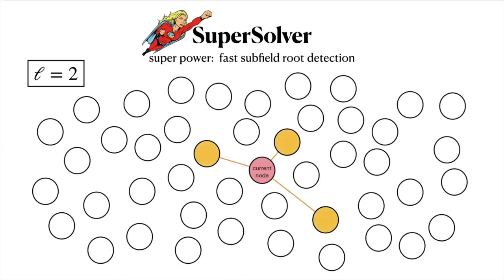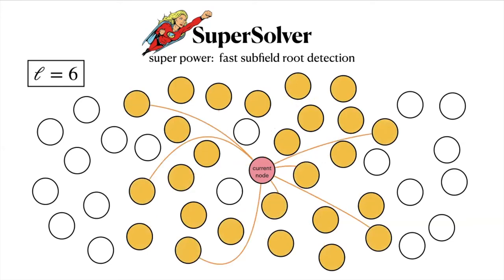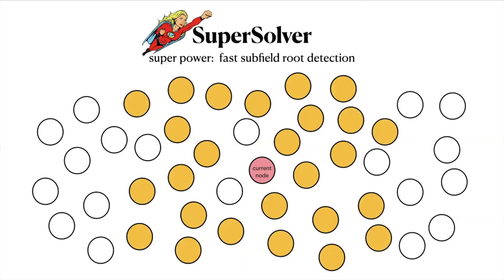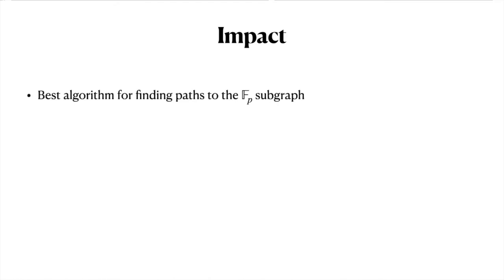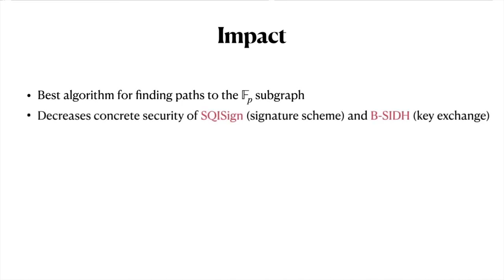Building on this, we present Supersolver with super-fast subfield root detection. This allows us to scan a larger proportion of the graph at each step, therefore minimizing the number of F_p operations per node revealed in the graph. In this way, we can cover a larger proportion of the graph while still minimizing the number of F_p operations, providing the best algorithm for finding paths to the F_p subgraph and decreasing the concrete complexity of the Delfs-Galbraith algorithm. This affects schemes such as SQISign, an isogeny-based signature scheme, and B-SIDH, an isogeny-based key exchange.